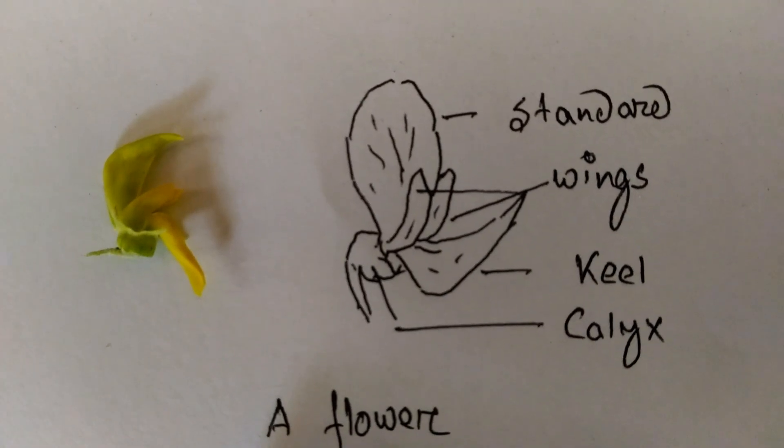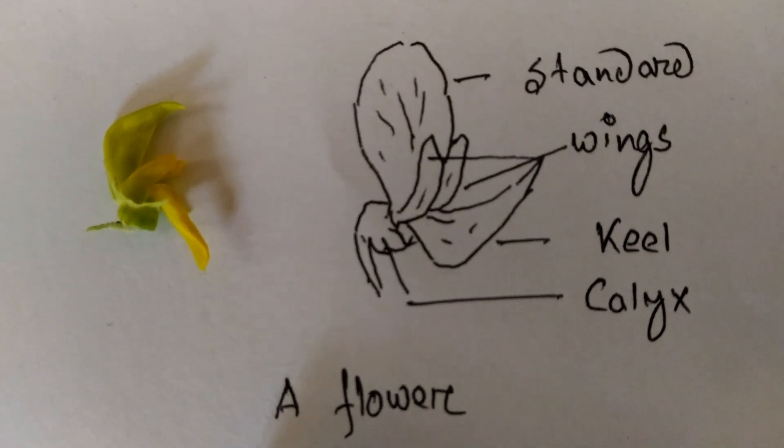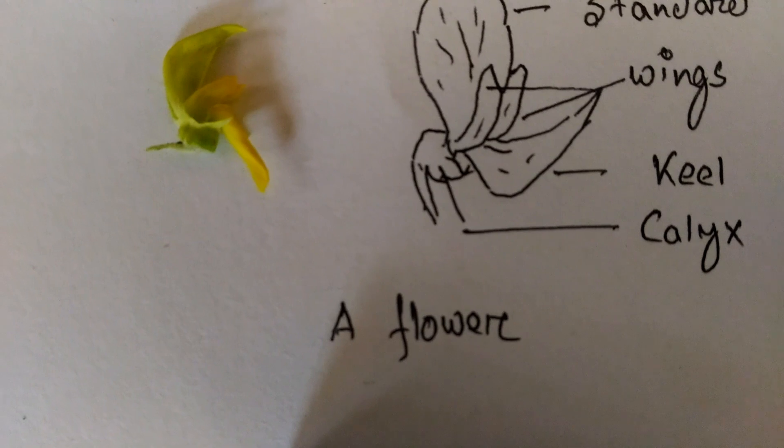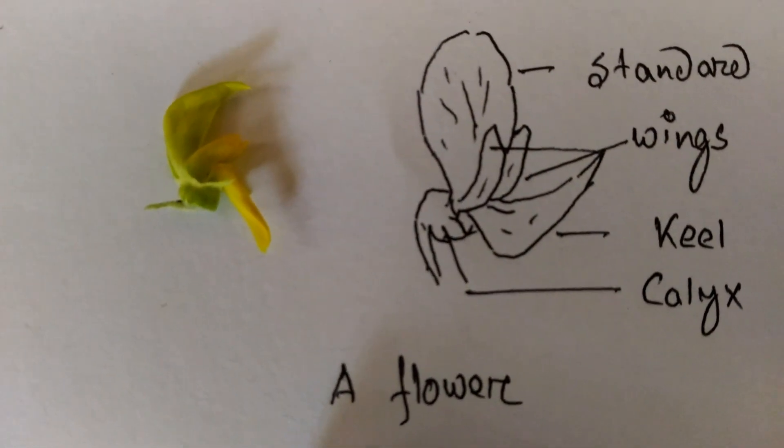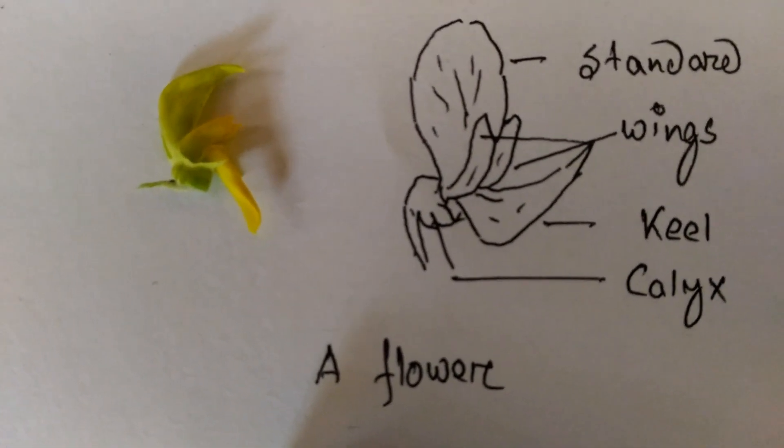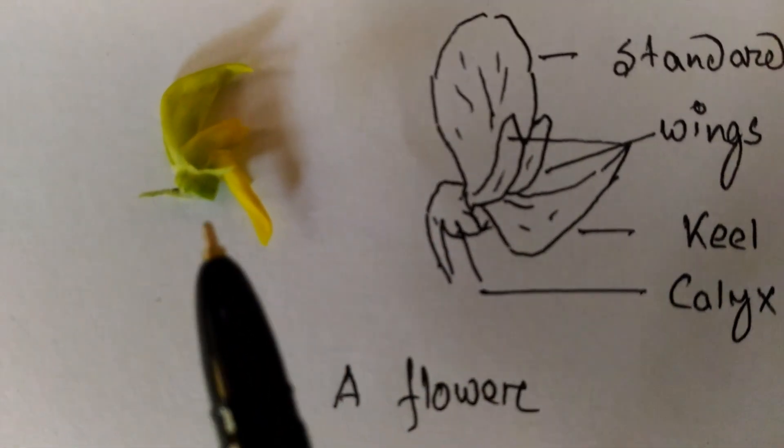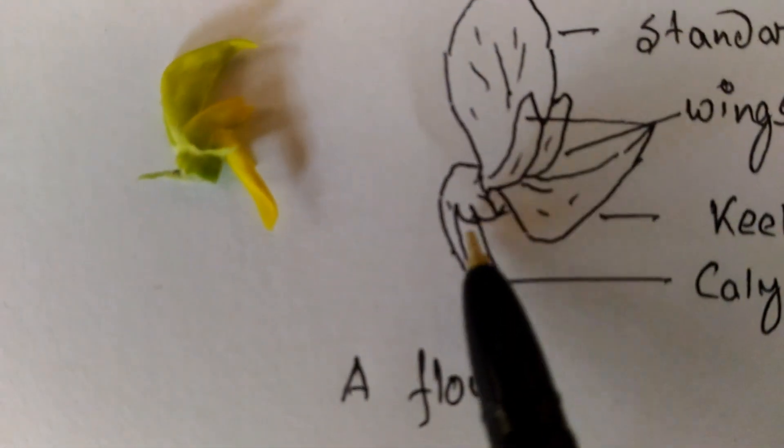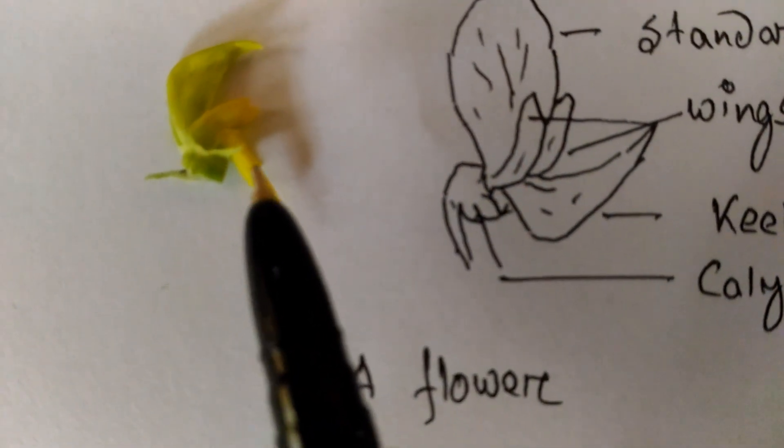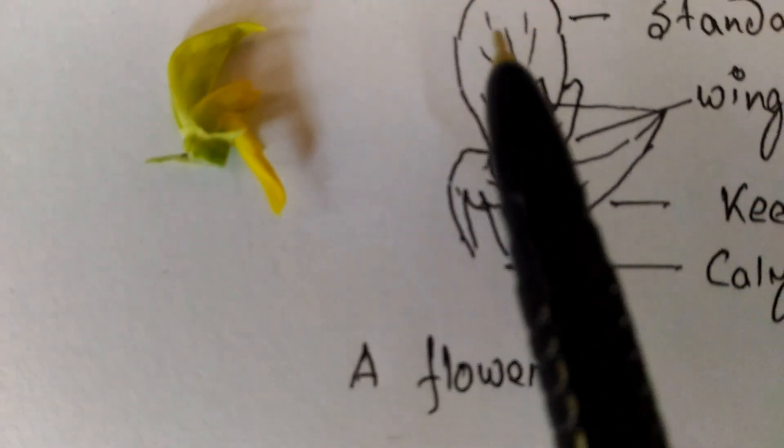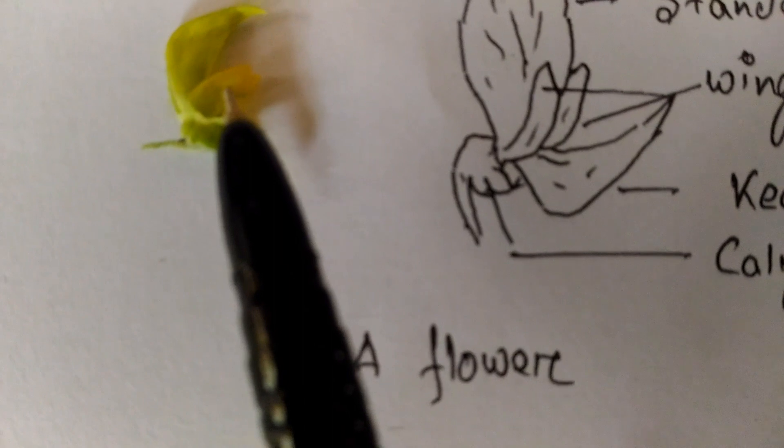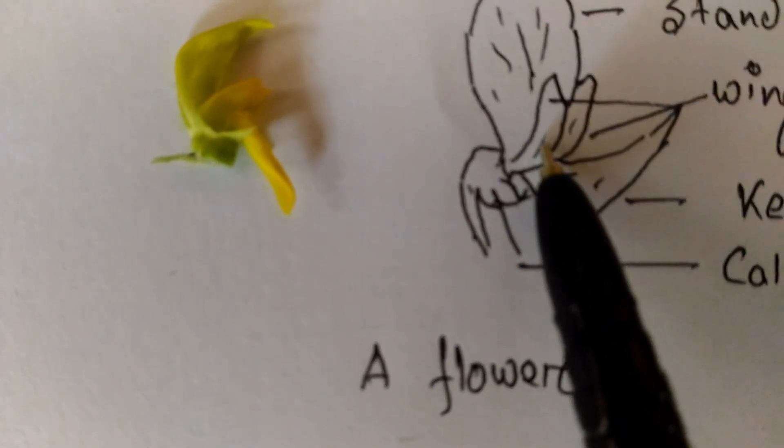The flower is complete as it has calyx, corolla, androecium, and gynoecium, and it is zygomorphic, bisexual, hypogynous. The ovary is superior and the color is yellow having streaks with purple color.